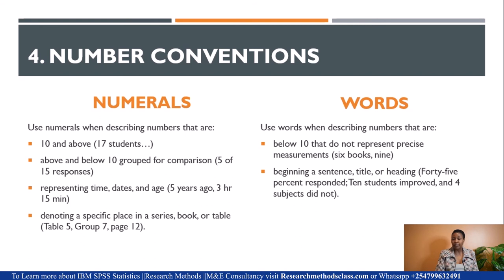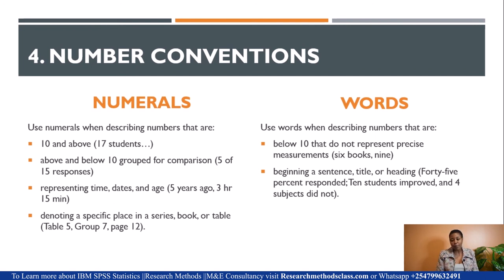Now let's look at number conventions in the paper — when to use numerals and when to use words. Use numerals for numbers 10 and above; for example, '17 students were used in this study.' Also use numerals when numbers above and below 10 are grouped for comparison; for example, '5 of the 15 responses.' Use numerals when representing time, dates, and age; for example, '5 years ago,' '3 hours and 15 minutes,' '15 years.' Also use numerals when denoting a specific place in a series, books, or table; for example, 'number 5,' 'group 7,' 'page 12.'